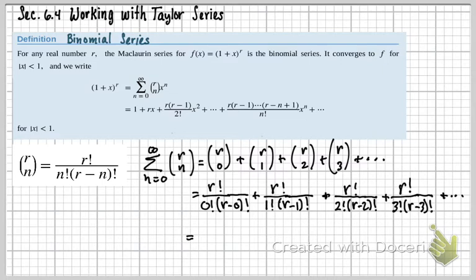So now, if I continue simplifying here, this top one here is going to be R factorial over 1. 0 factorial is 1, and then R factorial on the bottom. Those are going to cancel, and look what I get for that first term. It's a 1.